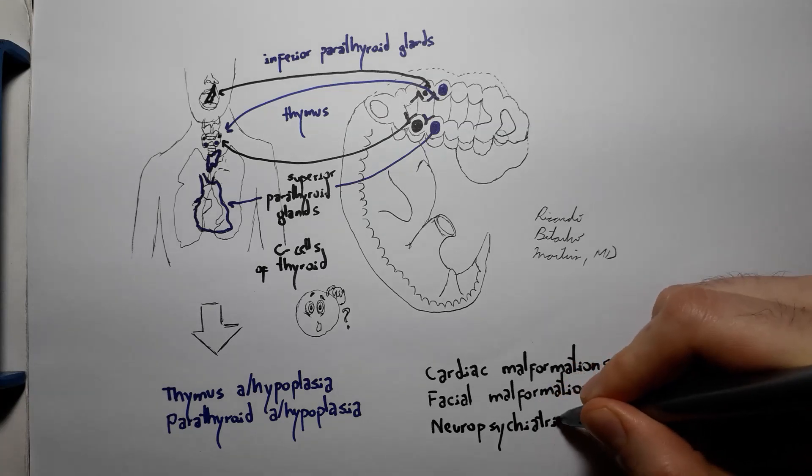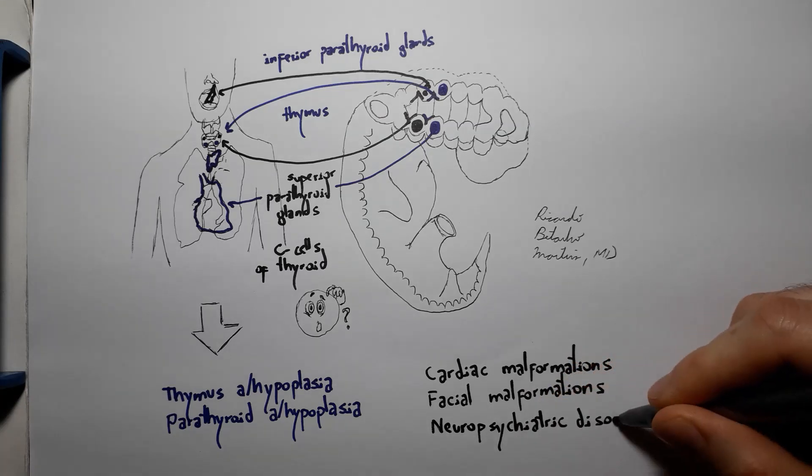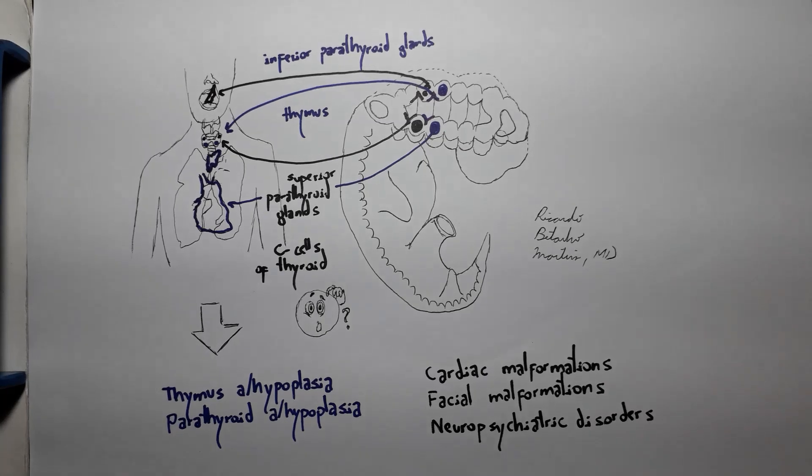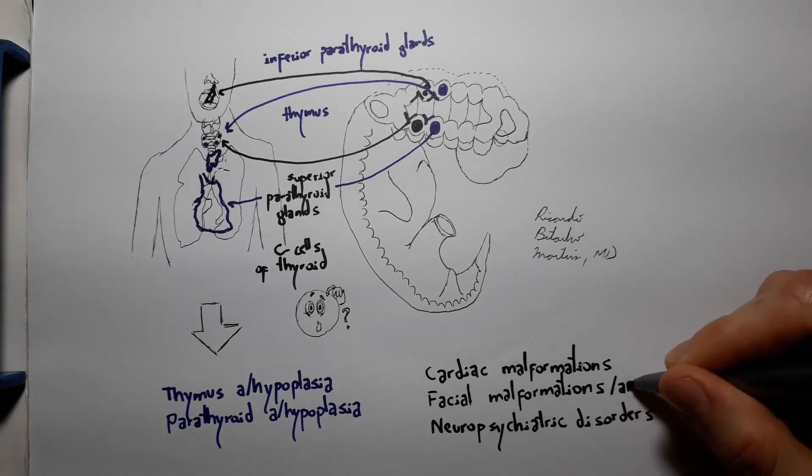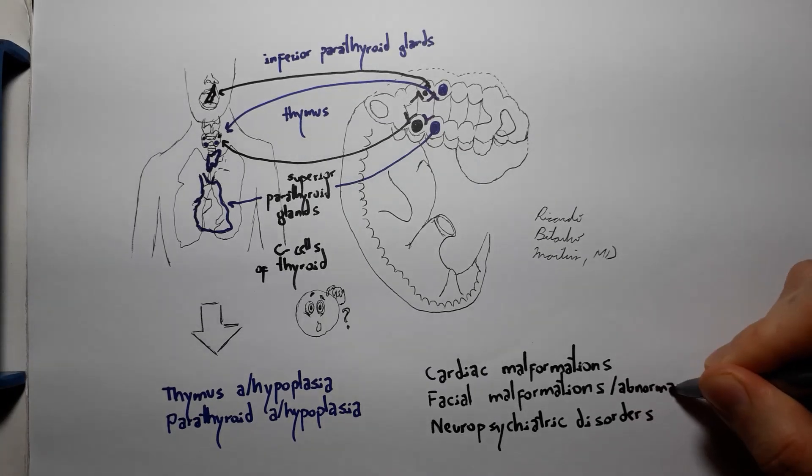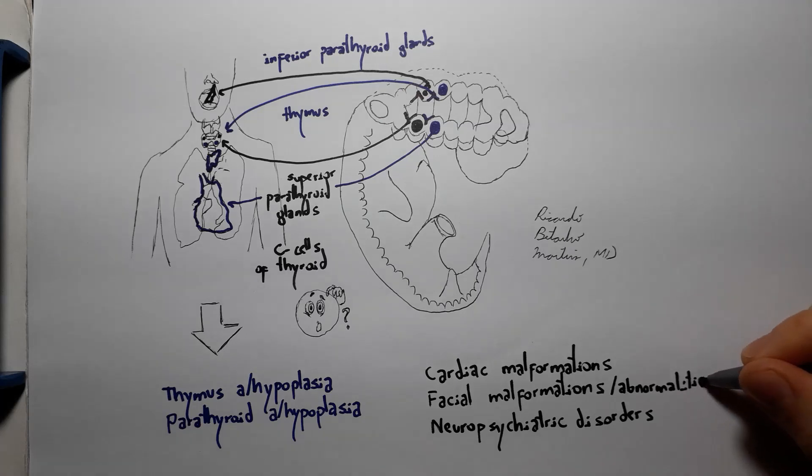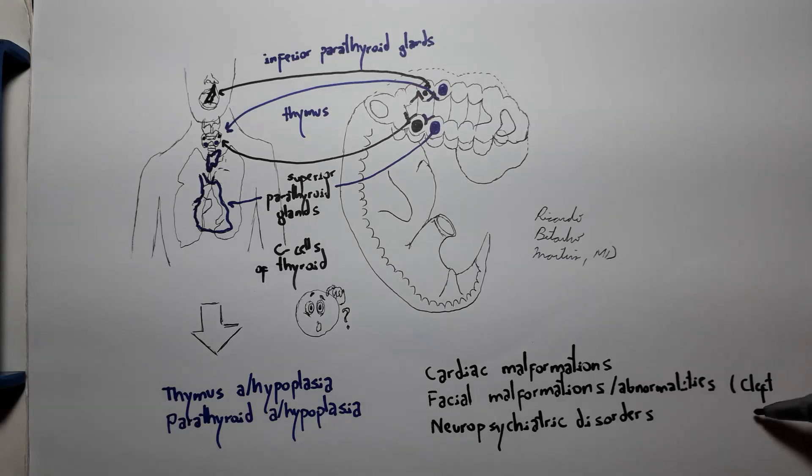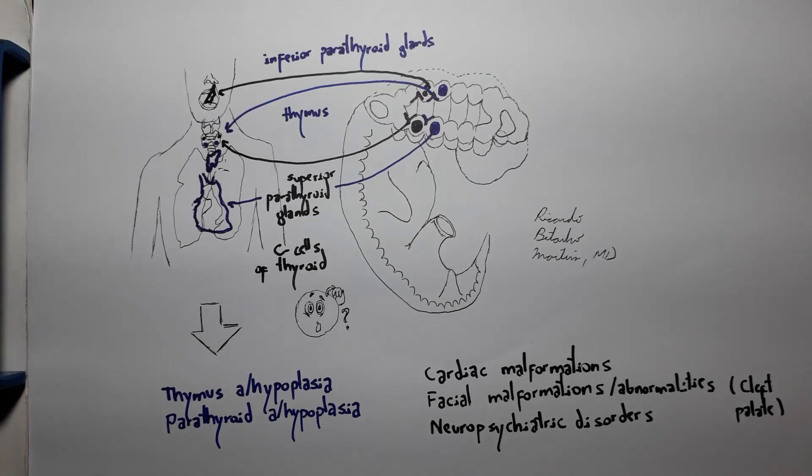These manifestations are often remembered through the mnemonic CATCH-22, which stands for cardiac defects, abnormal facies, thymic hypoplasia, cleft palate, and hypocalcemia. 22 then stands for the 22q11.2 deletion.